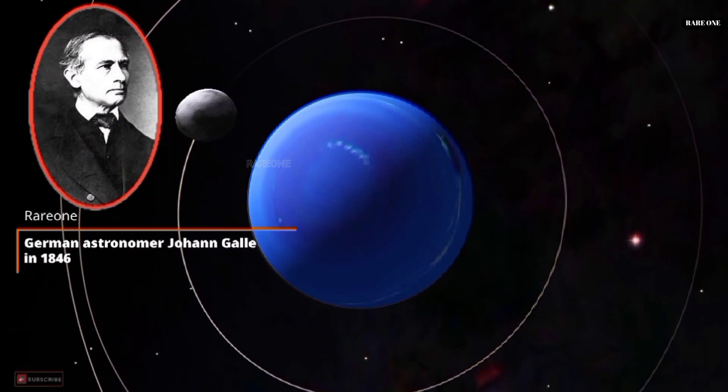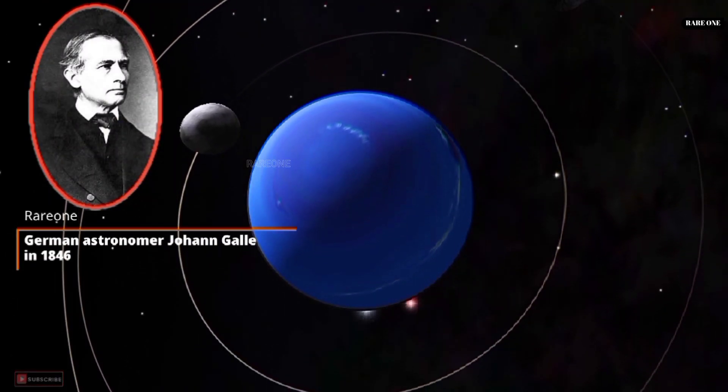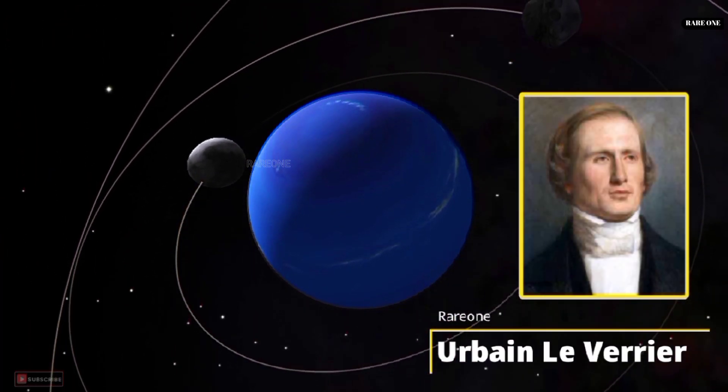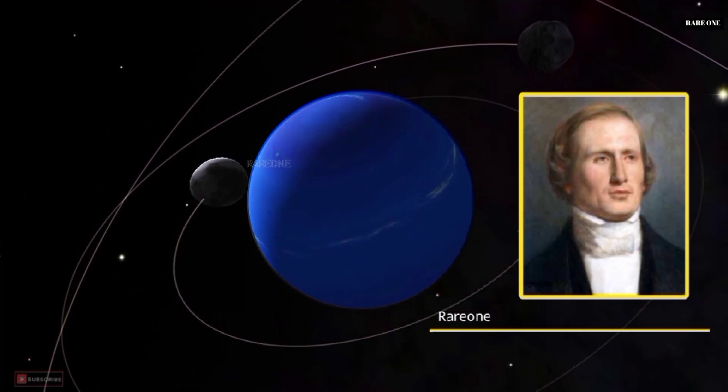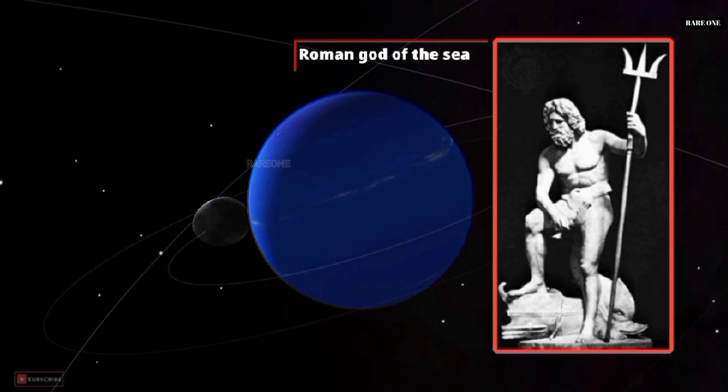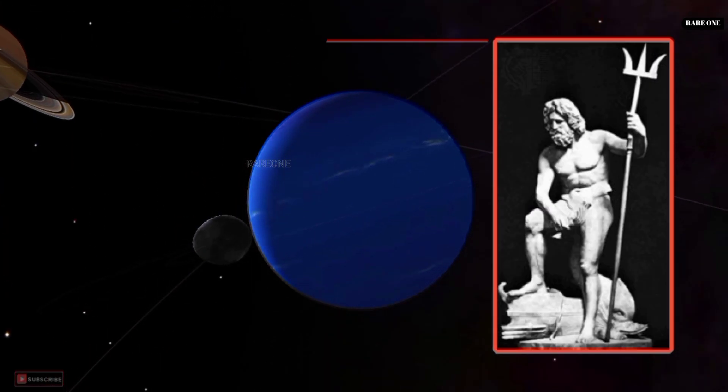Using these predictions, German astronomer Johann Galla spotted Neptune in 1846, just where French mathematician Urbain Le Verrier had calculated it would be. Its name, suggested by Le Verrier himself, comes from the Roman god of the sea, a fitting moniker for this distant blue world.